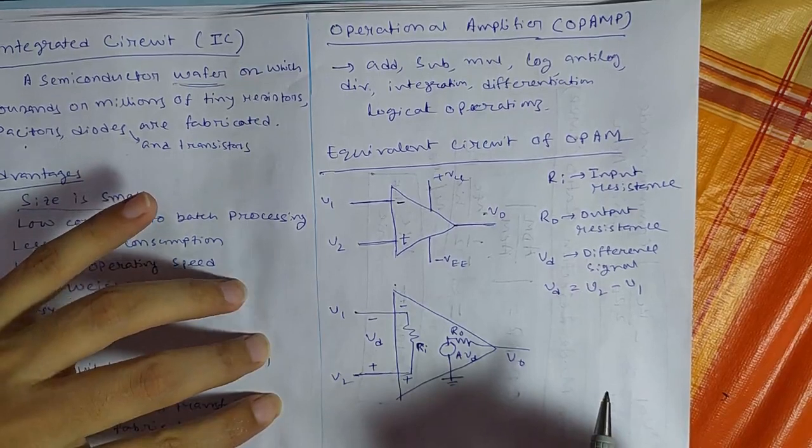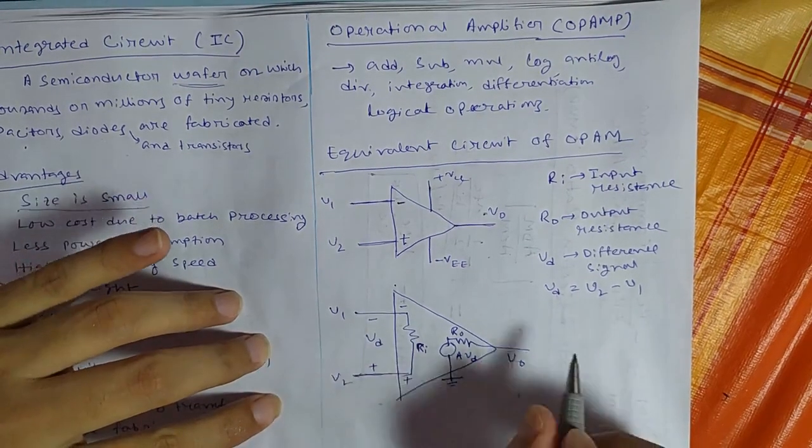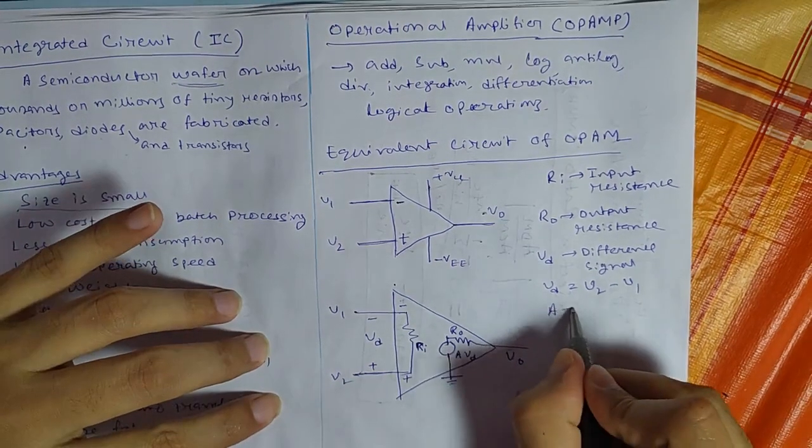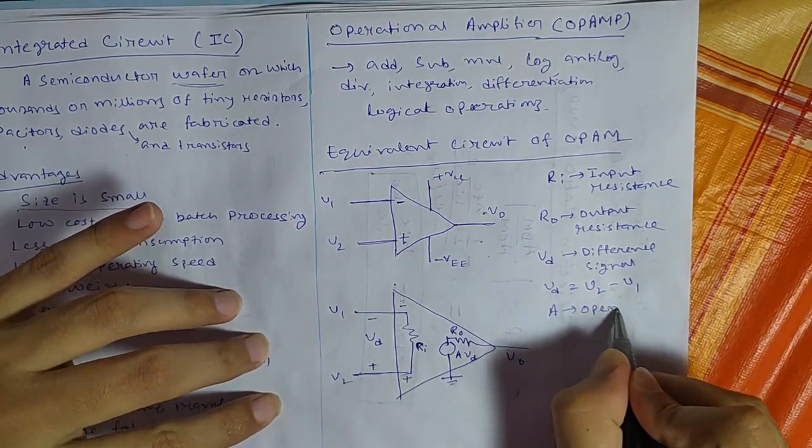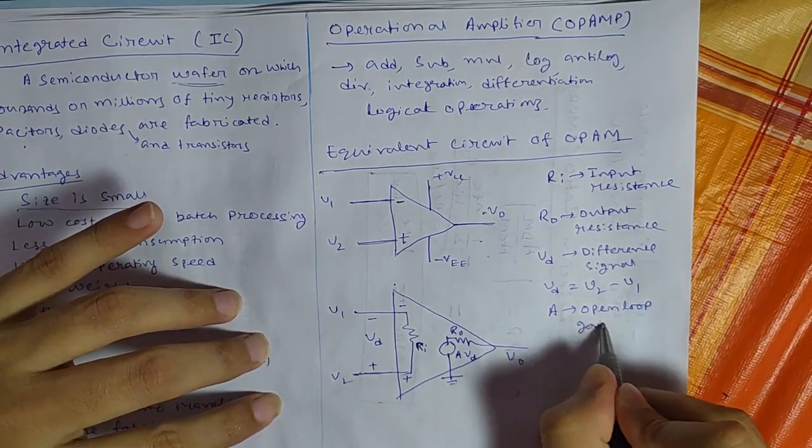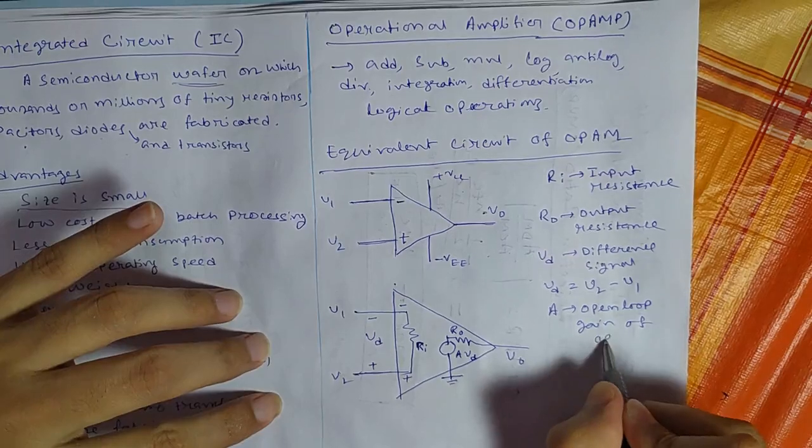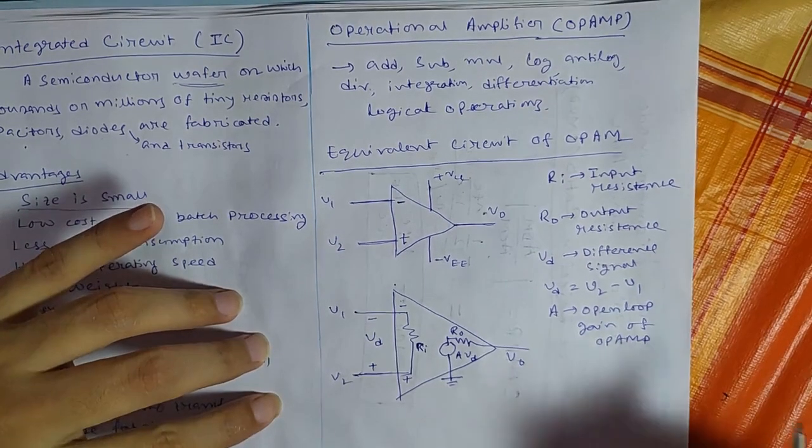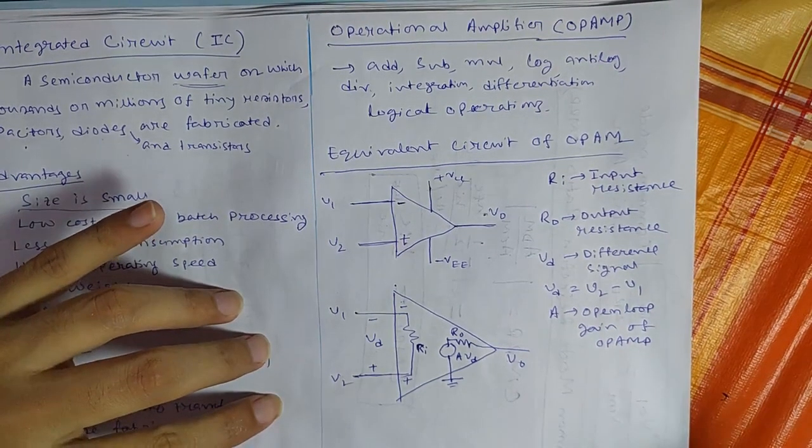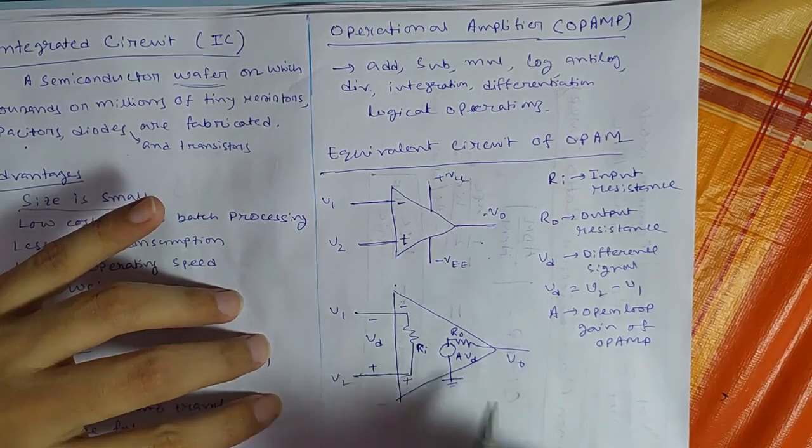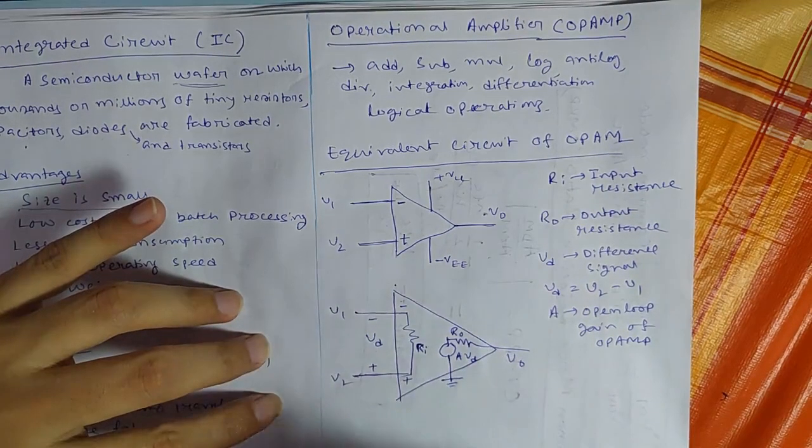A is the op-amp gain. A is known as open loop gain of op-amp. So that is the basic electrical equivalent symbol of this op-amp.